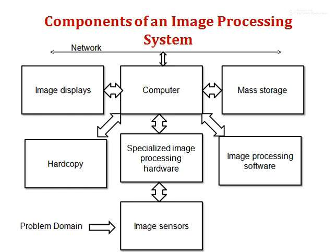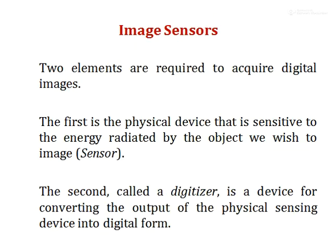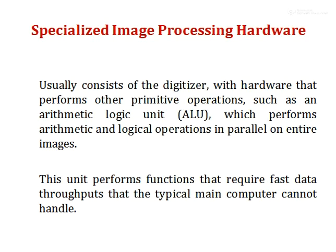Let us see one by one what are the functions of each block. The first one is the image sensor. It is used to sense the image — it's a sensing device. It has two elements: one is a physical sensing device used to capture the image, and the next one is a digitizer. A digitizer converts an analog image into a digital form, since images are generally analog in nature.